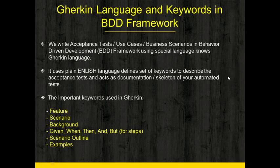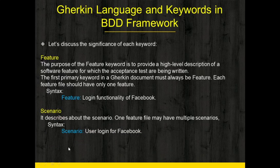These are some important keywords used in Gherkin language: Feature, Scenario, Background, then we have Given, When, Then, And, and But — which are used to write the steps for acceptance tests — then we have Scenario Outline, and then we have Examples. Each keyword used by Gherkin language has its own significance, so let's discuss the significance of each keyword in detail.